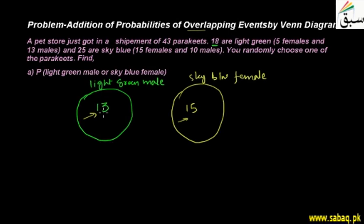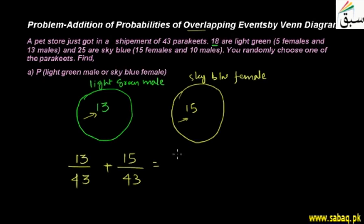In this case, the probability is 13 over 43, because total parakeets are 43. Plus 15 over 43. So this is 15 plus 13 equals 28 over 43. The first probability — of light green male or sky blue female — is 28 over 43.